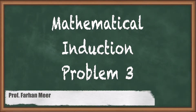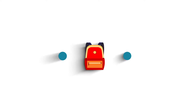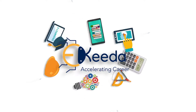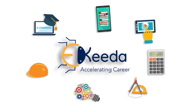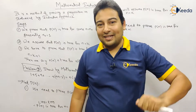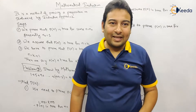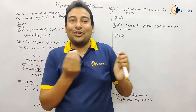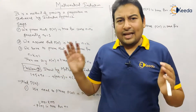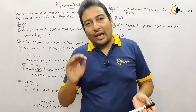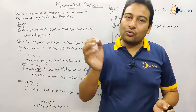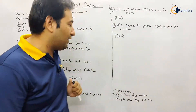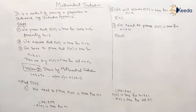Hello friends, in this video we will discuss problem number three on mathematical induction. This problem is exactly similar to problem number one and two, so all the steps are the same. If you're comfortable with problems one and two, I highly recommend you pause this video, solve the problem yourself, and then verify the result. The problem is: 1 + 5 + 9 + ... and the generalized term is 4n minus 3.